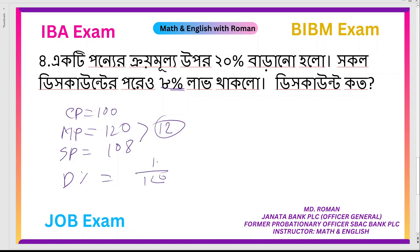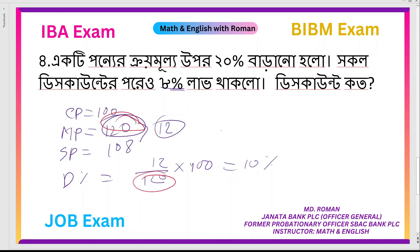The expression into 100 equals 10%. The discounted price is the most important — mark price. Discounted price is the most important mark price. This is the mark price. 10% is the answer.